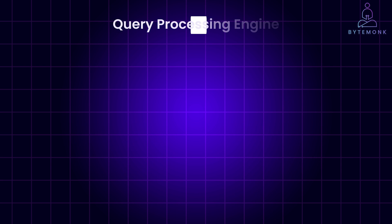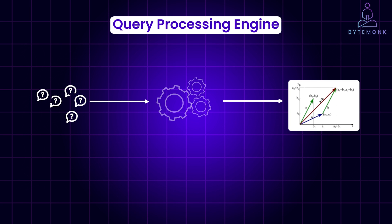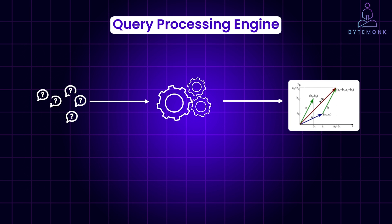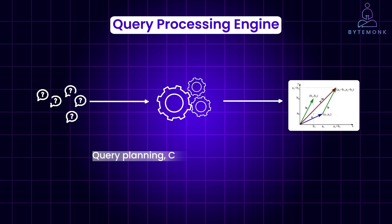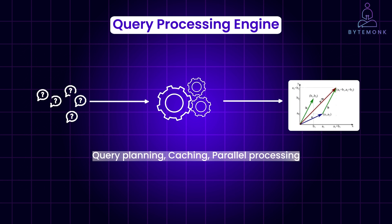The query processing engine handles incoming queries, translates them to vector operations, and utilizes the index to efficiently retrieve relevant vectors. It may employ query planning, caching, and parallel processing techniques to speed up search and reduce resource consumption.